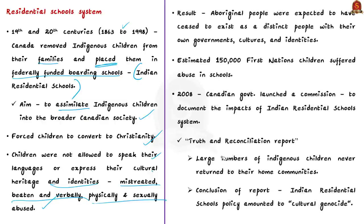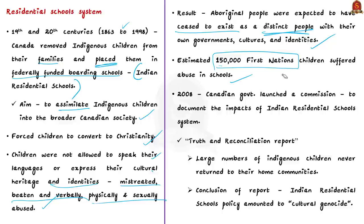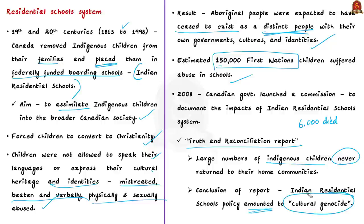As a result, Aboriginal people were expected to cease to exist as a distinct people with their own governments, cultures and identities. Around 150,000 First Nations children suffered abuse in these schools. To find and document the impacts of this Indian residential school system, the Canadian government launched a commission in 2008. This commission submitted a report named Truth and Reconciliation Report. The commission found that large numbers of indigenous children never returned to their home communities — they either lost touch with their parents, died, or were killed. Up to 6,000 children are said to have died in these schools. The report concluded that the Indian residential schools policy amounted to cultural genocide, and in 2008 the Canadian government formally apologized for this system.